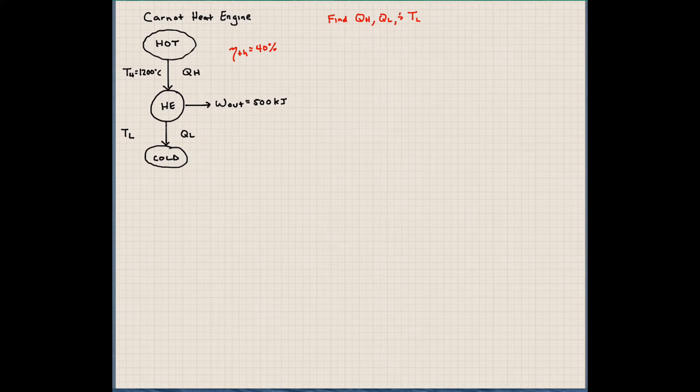So in order to find QH, TL, and QL, we're going to use some of the definitions in our text. First, I'm going to use the definition of thermal efficiency for a Carnot heat engine, which is 1 minus TL over TH.